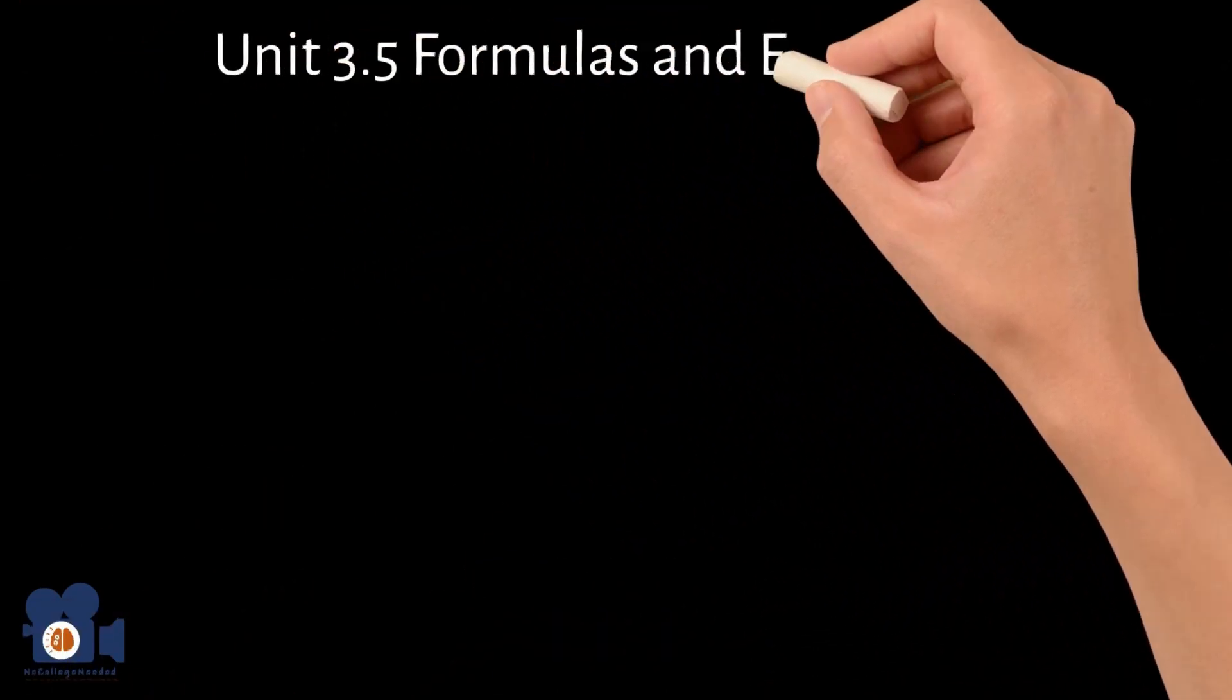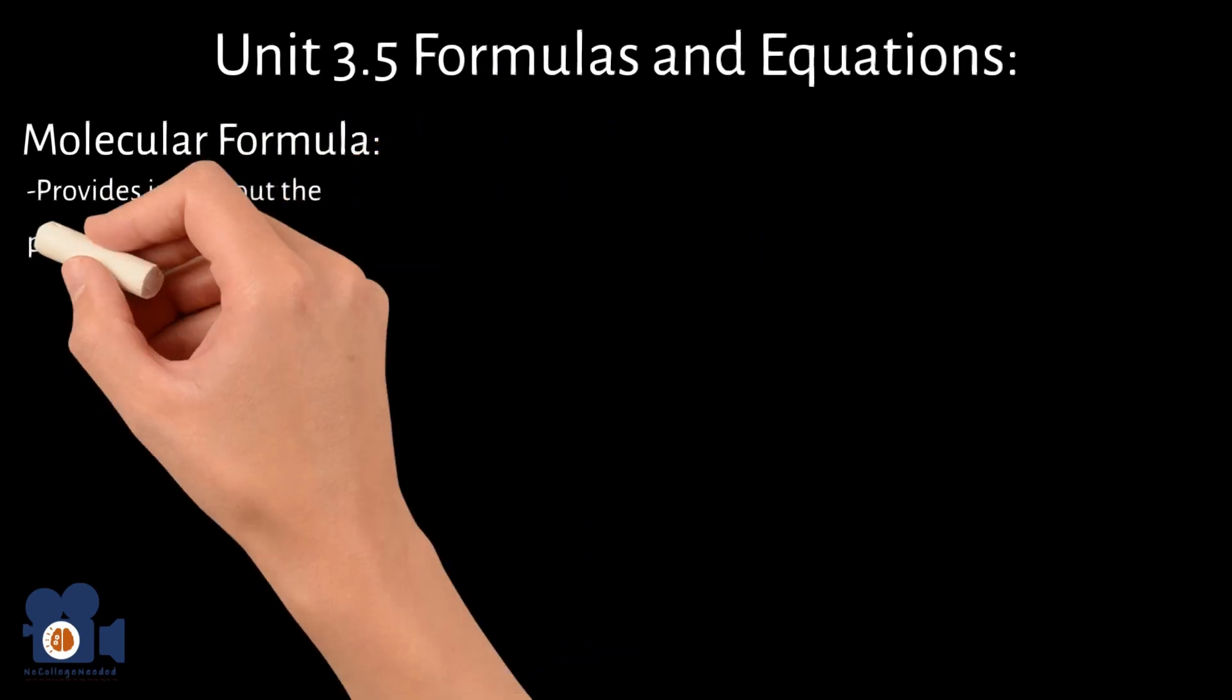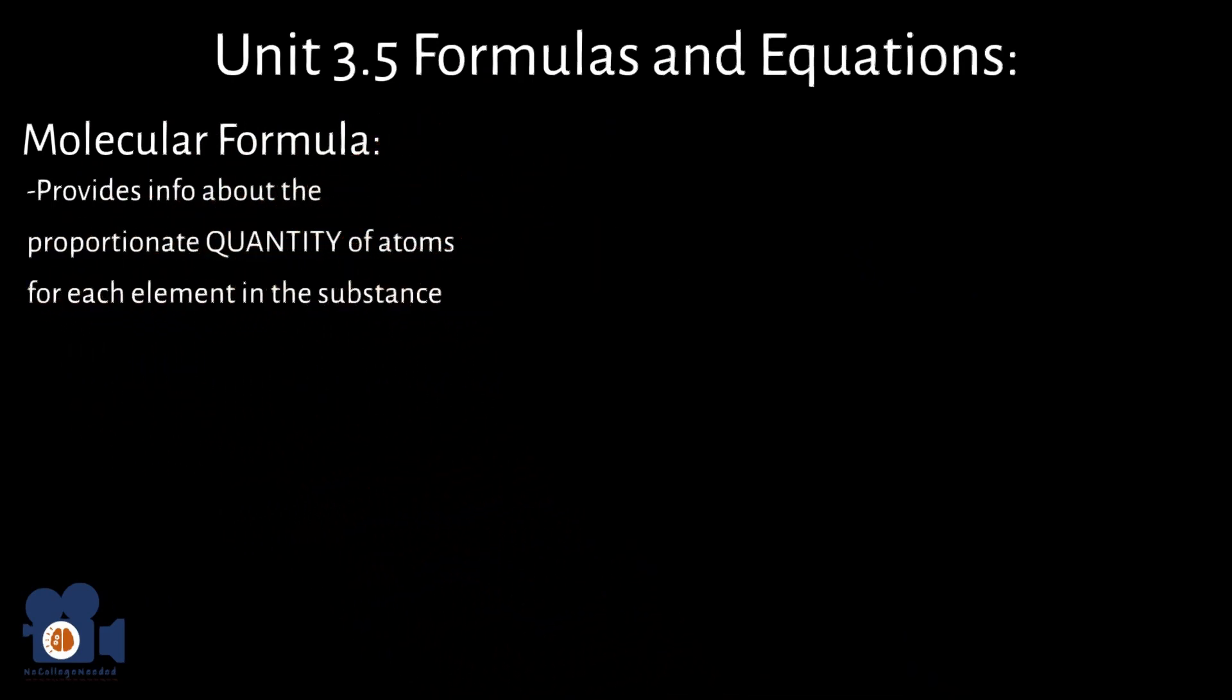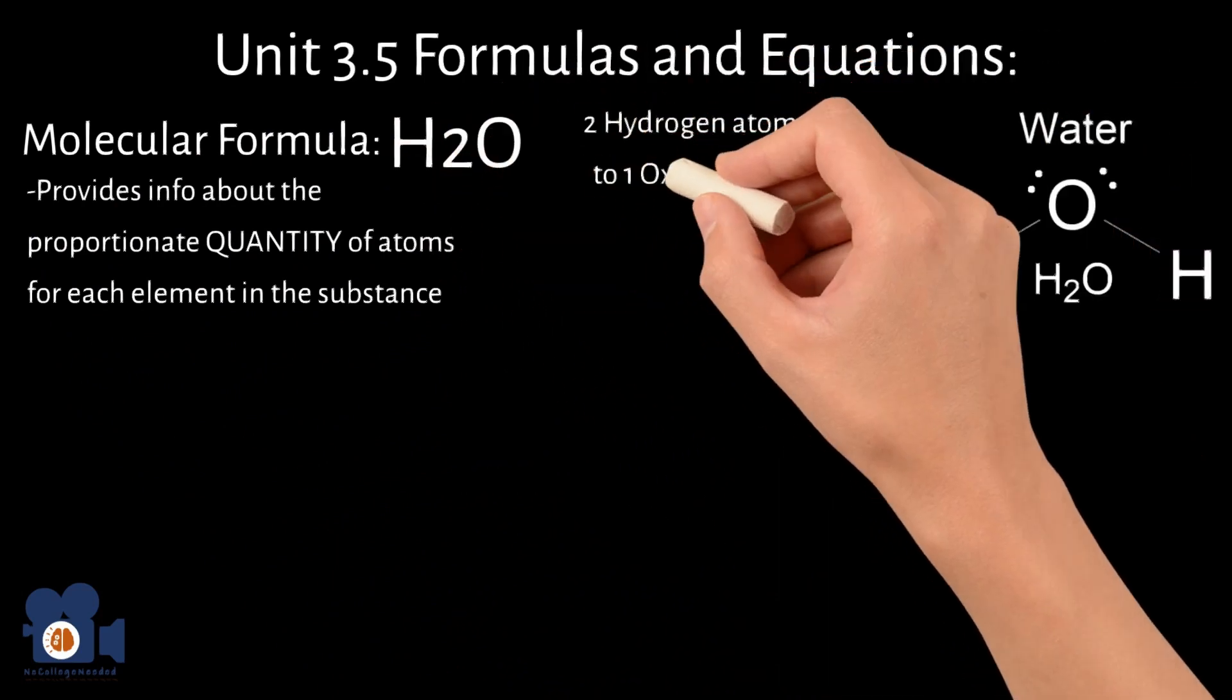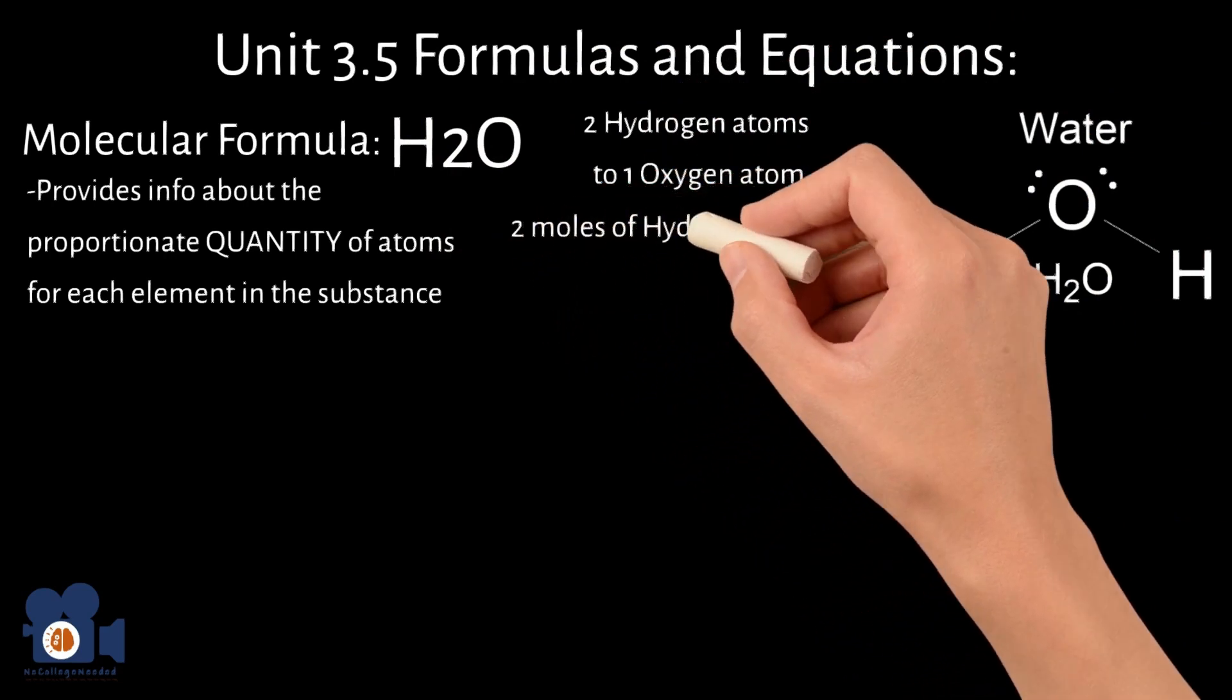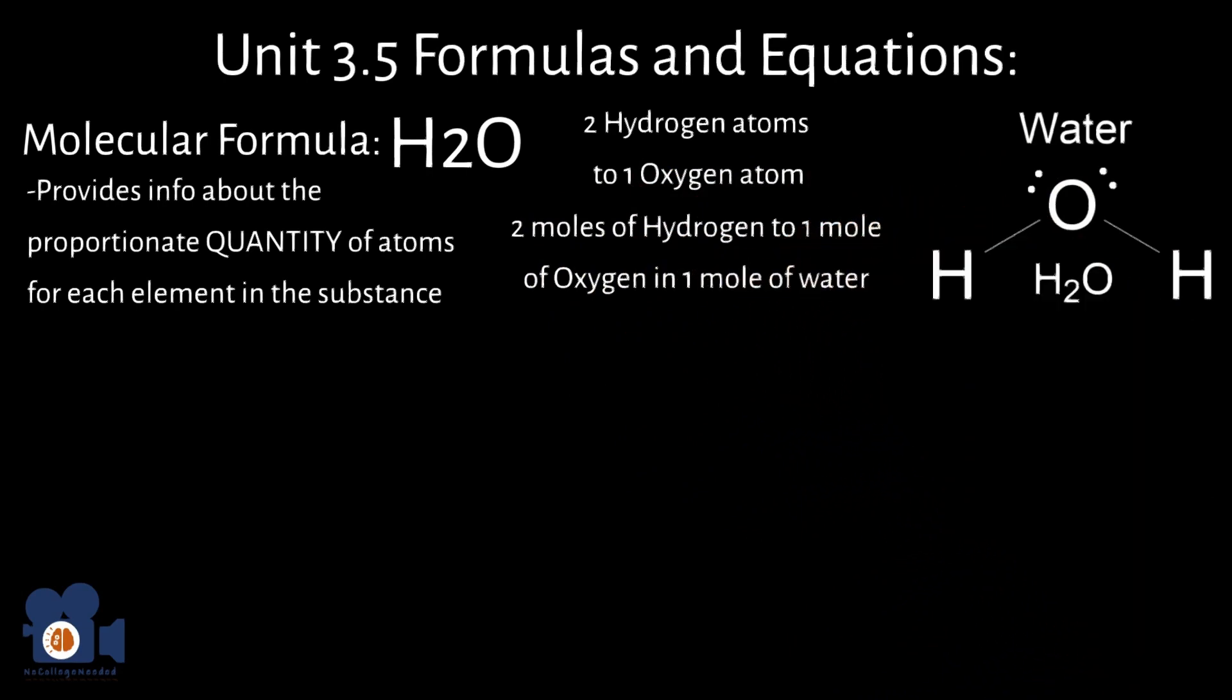Unit 3.5: Formulas and Equations. As discussed in Unit 2, the molecular formula of a substance provides information about the proportionate quantity of atoms for each element present in the substance. For example, in H2O, there are two hydrogen atoms to one oxygen atom. And as stated in the previous video, there are two moles of hydrogen to one mole of oxygen in one mole of water.